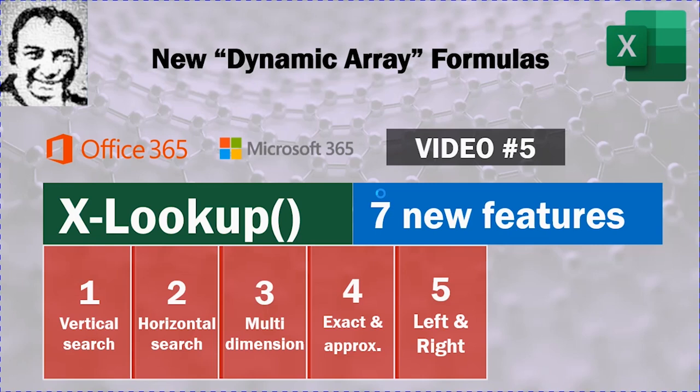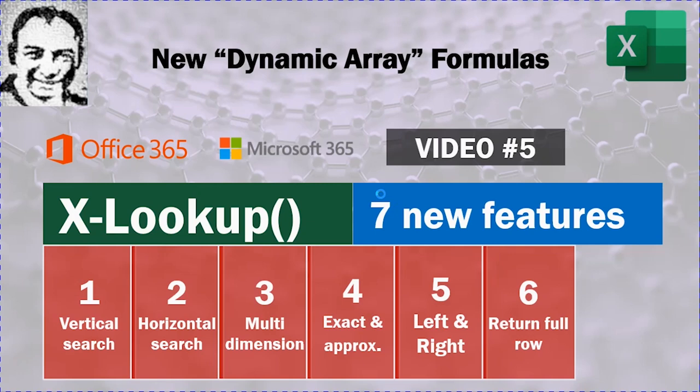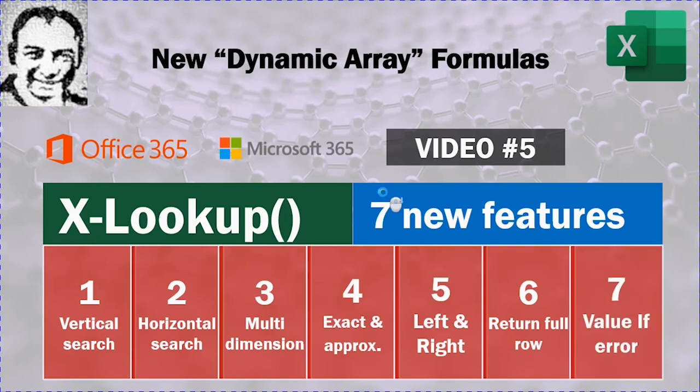We'll also look at how this formula does the lookup from the left or from the right — you don't have to put the lookup column on the most left of your database. We'll see how this formula can return a full row or even a full column, building on the spill concept discussed at the beginning of this series. Finally, we'll look at a new feature: you can add the value-if-error inside the XLOOKUP formula itself.